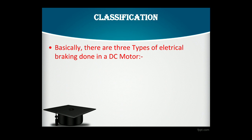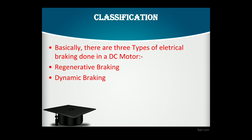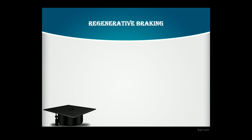Electric braking has very fast response and a precision control mechanism. The next slide is the classification. Basically, there are three types of electric braking done in a DC motor: number one, regenerative braking; number two, dynamic braking; and number three, plugging.